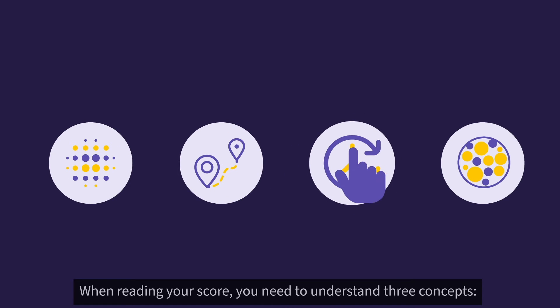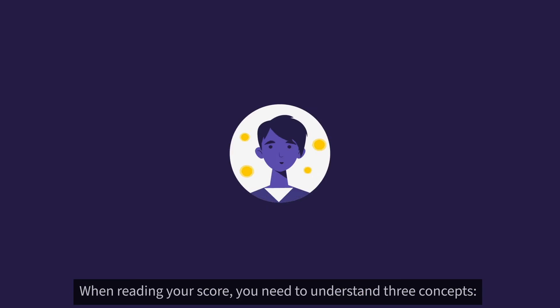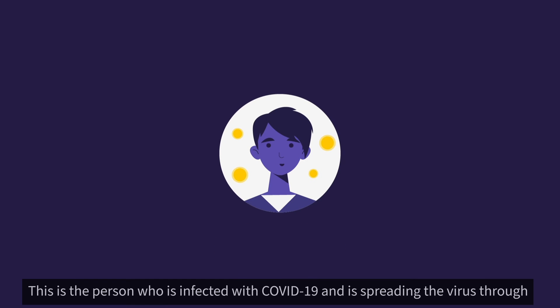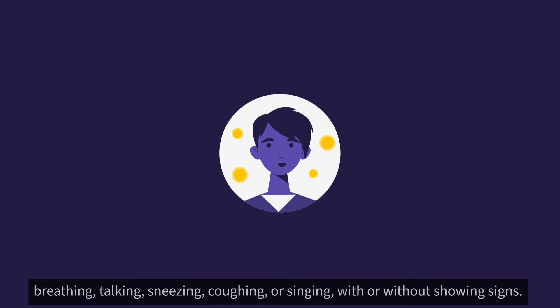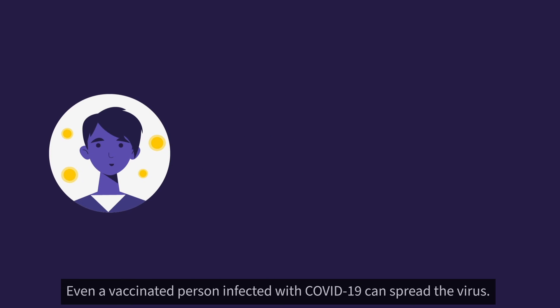When reading your score, you need to understand three concepts. The source — this is the person who is infected with COVID-19 and is spreading the virus through breathing, talking, sneezing, coughing, or singing, with or without showing signs. Even a vaccinated person infected with COVID-19 can spread the virus.